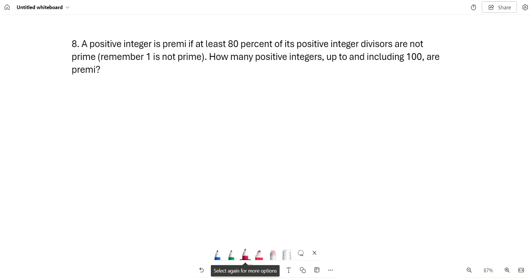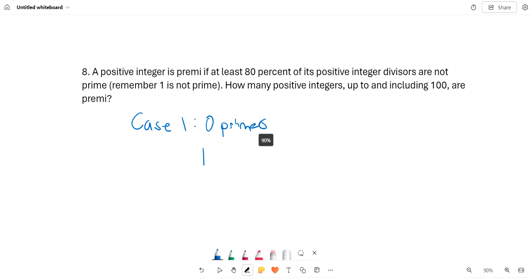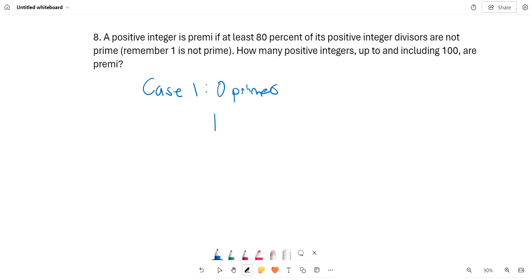Case 1: 0 primes. The only thing that fits this is just 1, and we classify 1 as not a prime.